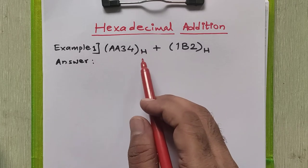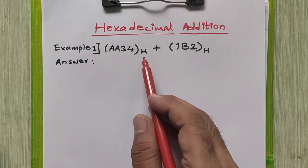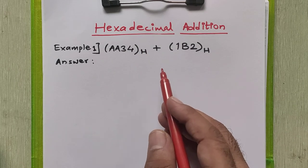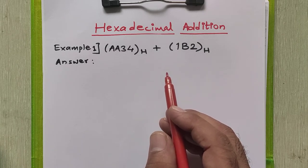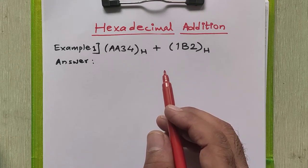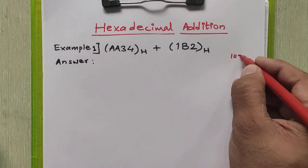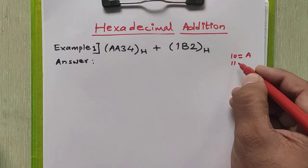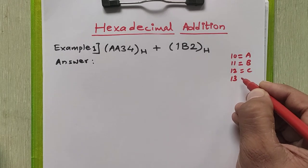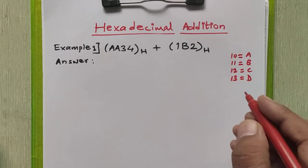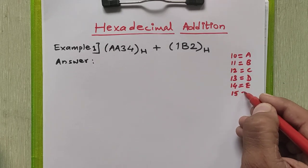As we know, the base of the hexadecimal number system is 16. We represent it by 16 or by capital H. There are total 16 valid digits ranging from 0 to 15. Those are: 0 to 9 are digits, whereas 10 is represented by capital A, 11 by capital B, 12 by capital C, 13 by capital D, 14 by capital E, and 15 by capital F.